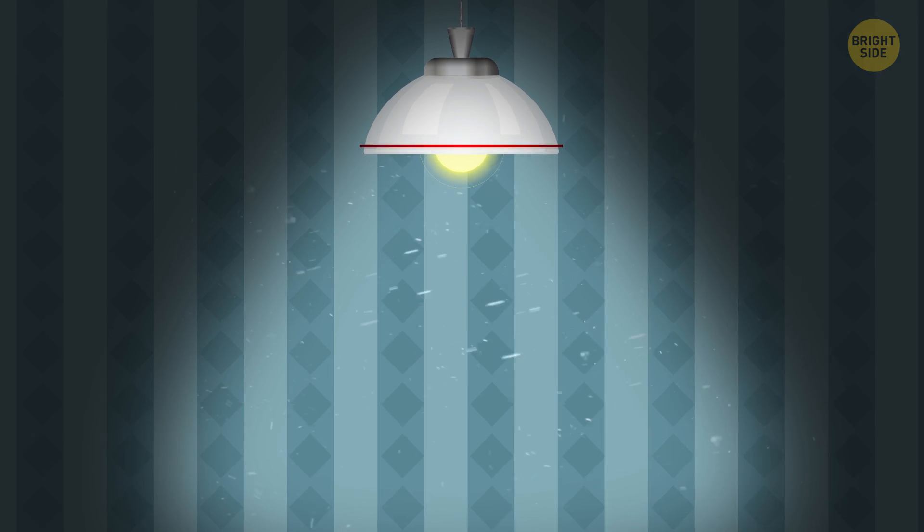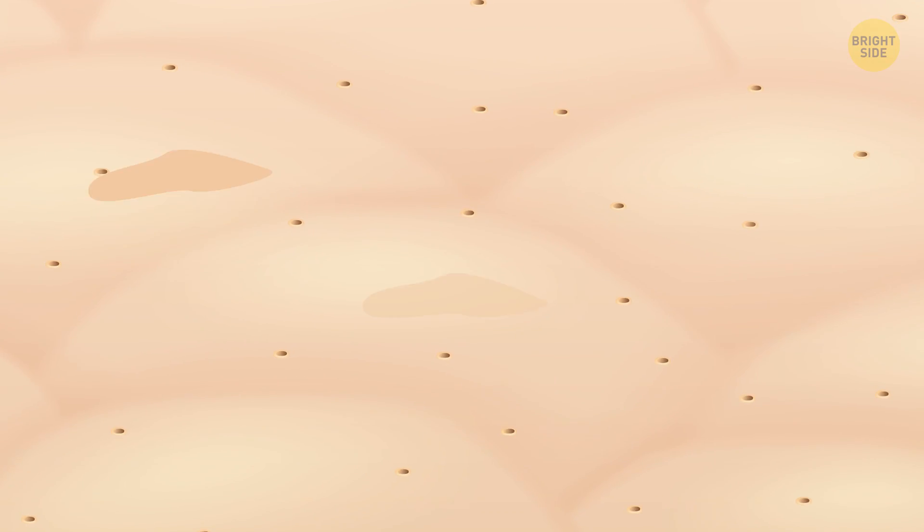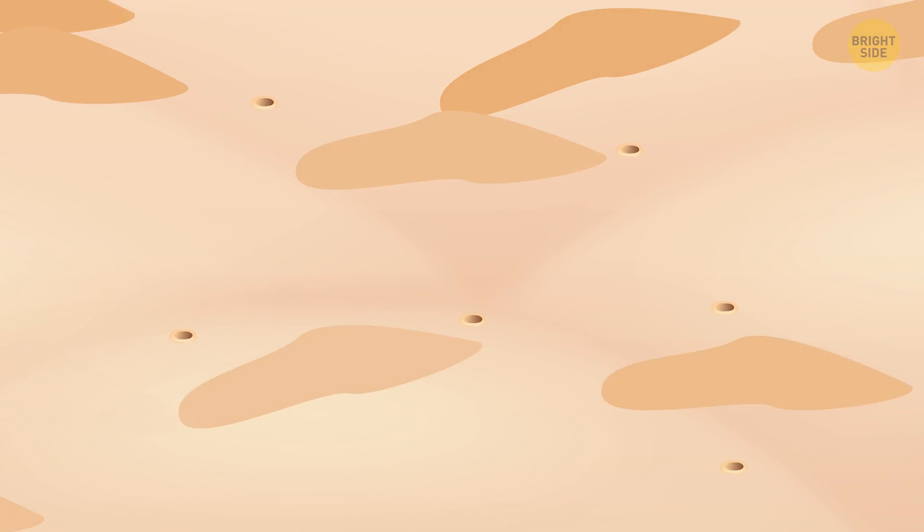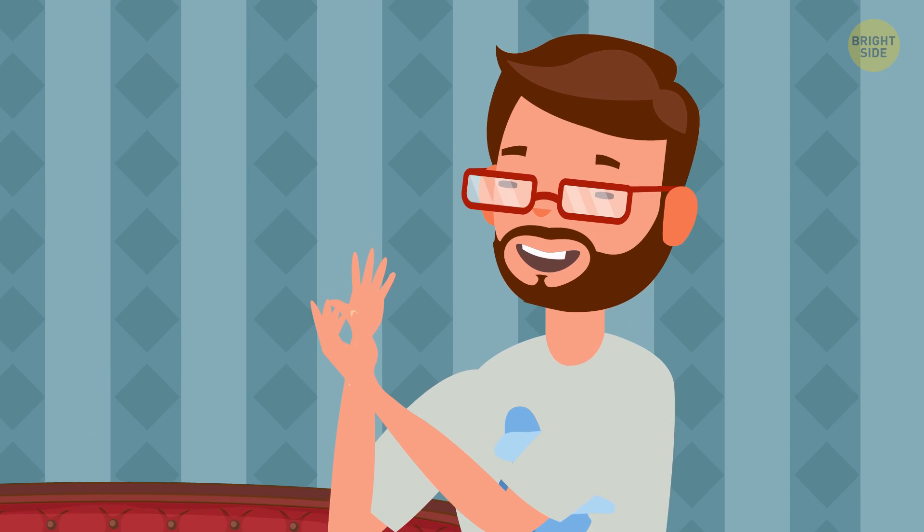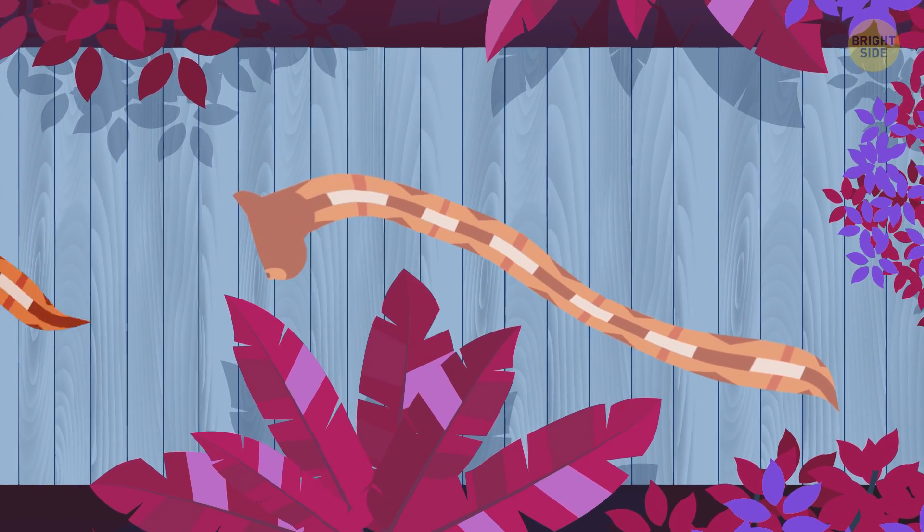By the way, half of the dust found in your house is old skin cells. And they call me flaky. We also completely shed our skin. It happens so slowly that we don't notice it. If you watched this process in a time-lapse video, it would look like a shedding snake.